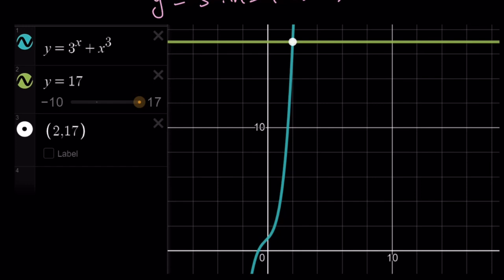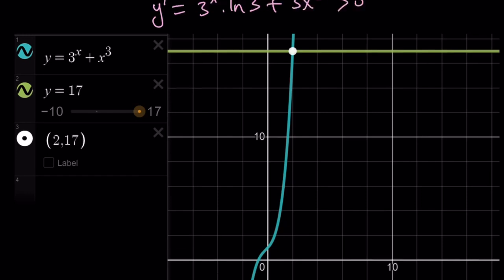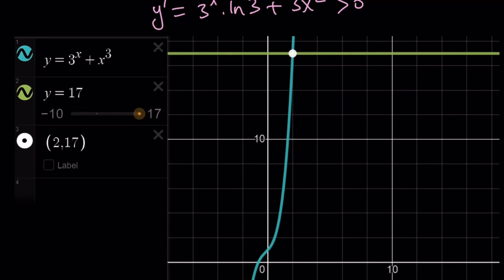Which means y, in this case, whatever the function is, is always increasing, and it's going to intersect a horizontal line at exactly one point, which is (2, 17). Which means x equals 2 again.